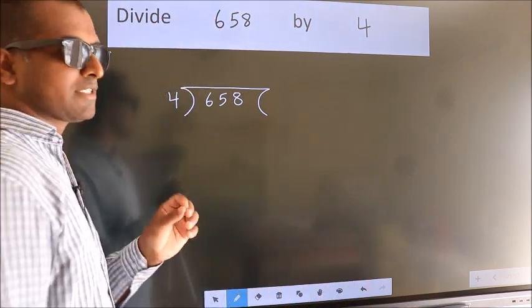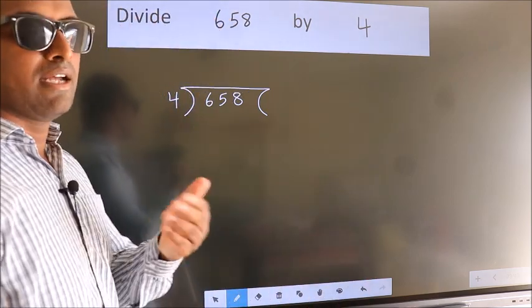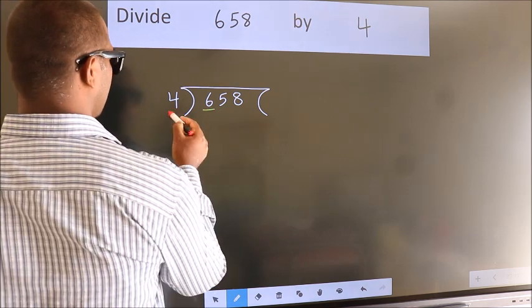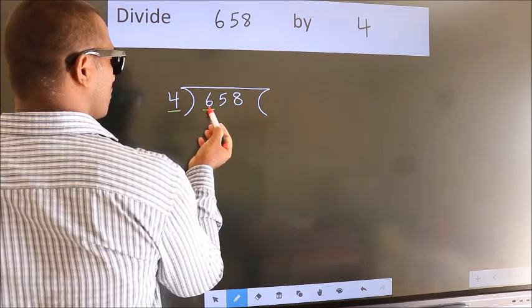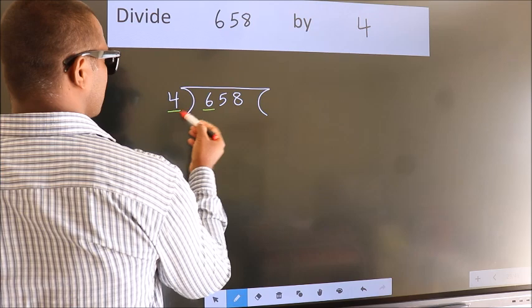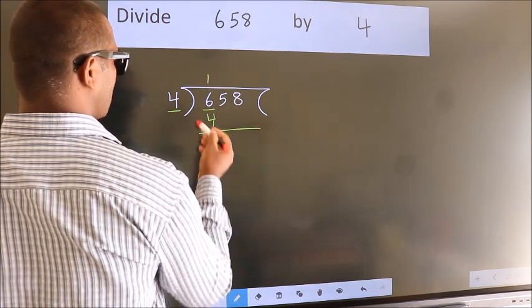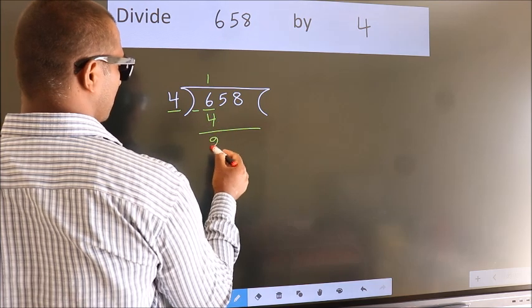This is your step 1. Next, here we have 6, here 4. A number close to 6 in the 4 table is 4 once 4. Now we should subtract. We get 2.